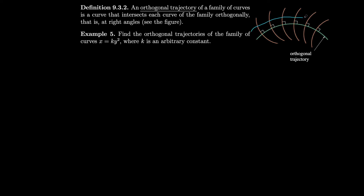Just like we can have a family of curves, we can also have a family of orthogonal trajectories. We'll do an example where we find all the orthogonal trajectories for the family of curves x equals k times y squared, where k is an arbitrary constant. The process requires finding a differential equation, because differential equations give us derivatives, and derivatives give slopes of tangent lines. If we find the slope of all the tangent lines, we can find the perpendicular lines, which are the tangents to the orthogonal trajectories.